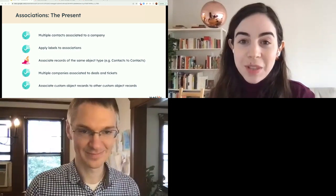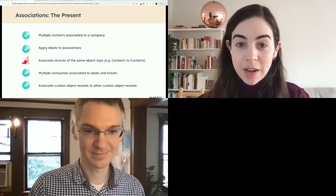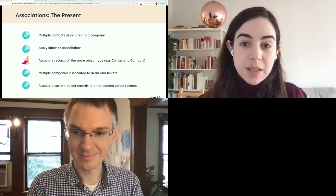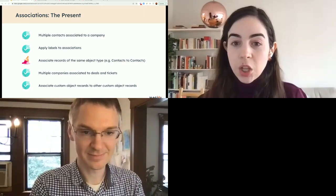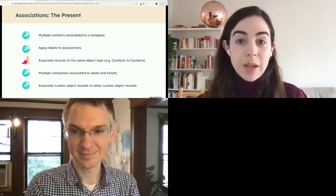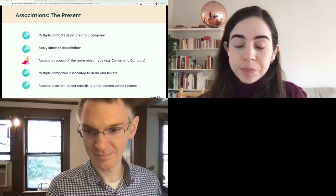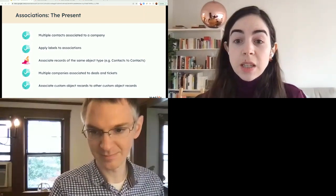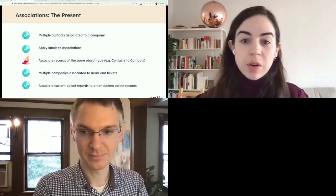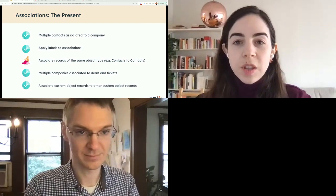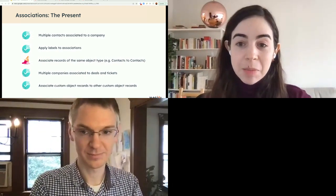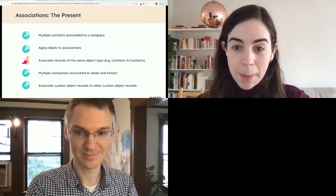In the past couple of years we've closed a lot of these gaps. The most popular association pairing we've seen in the data since rolling out these improvements is between contacts and deals. The top labels customers are using include decision maker, primary contact, partner, owner, influencer, champion — basically making it clear who has what role when it comes to a deal or contact record. Another common use case involves deals with several players, like a construction project with a contractor, developer, architect, or a media project with an investor, distributor, and a film studio. One gap we've left is the ability to associate records of the same object type, but I'll talk about that in a few minutes.